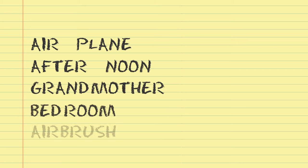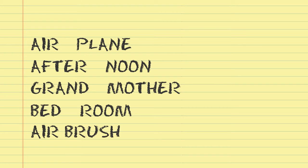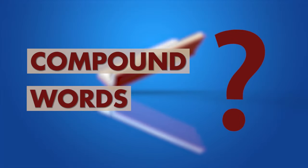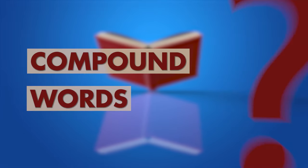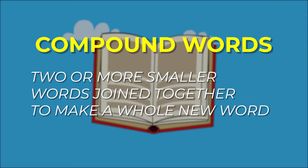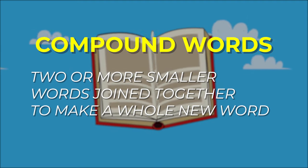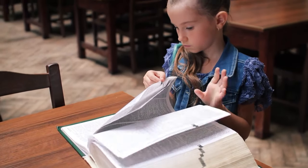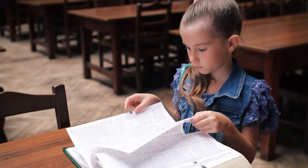Now look at the list of words again. Did you notice that all these words can be separated into two smaller words? These words are called compound words. Compound words are two or more smaller words that are joined together to make a whole new word, and that new word has a different meaning than the smaller words. Many small words are joined together to create compound words.